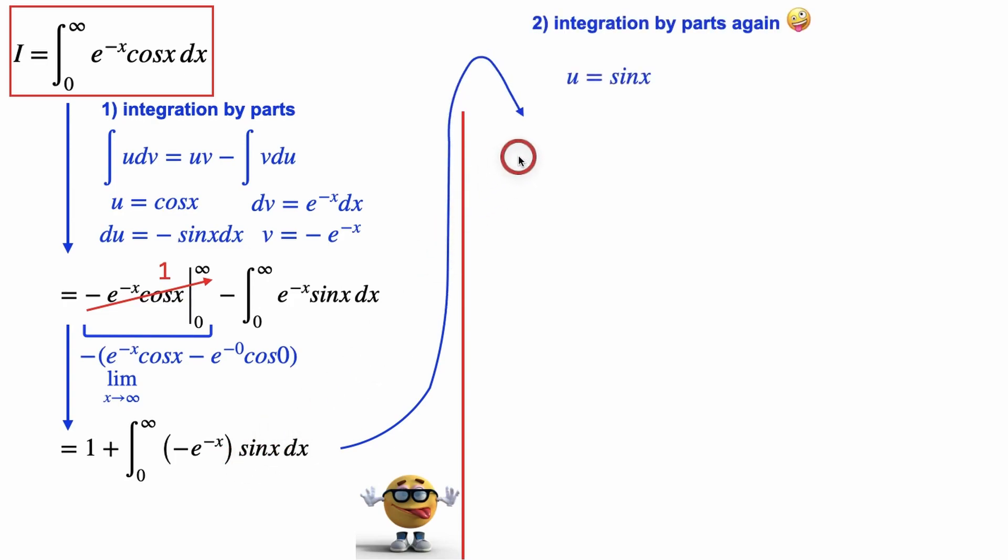Believe it or not. We'll set u equal to sine of x, so dv is everything else. Take the derivative, du equals cos x dx, and then integrate v equals e to the negative x. We'll plug this into the integration by parts formula to get this right here, uv minus v du. You can pause the video to verify that it's correct.